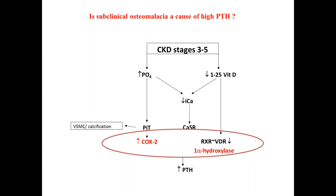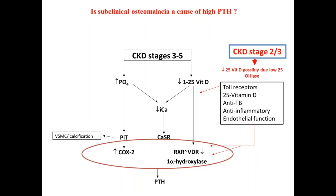What about vitamin D? We now know that vitamin D in its original form can get activated in the parathyroid gland — it doesn't have to go to the kidney. So can this vitamin D be useful, and should we be giving vitamin D to patients with CKD in earlier stages? We know it can activate all receptors, has some anti-TB properties, and is anti-inflammatory. Our own work and Vivek and Jha's work has shown that vitamin D given to CKD patients improves endothelial function.